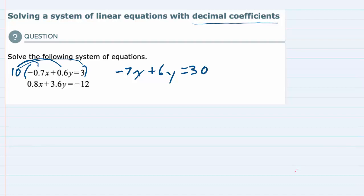So we've rewritten that equation now without any decimals. And then in the second equation, it's also 0.8x, 3.6y—both of those have one decimal place, so I'll multiply that by 10 as well.